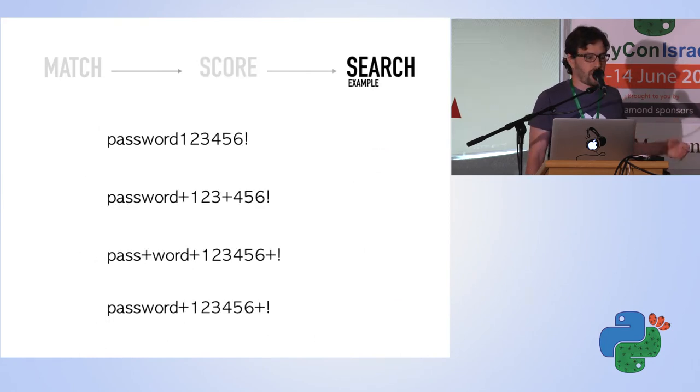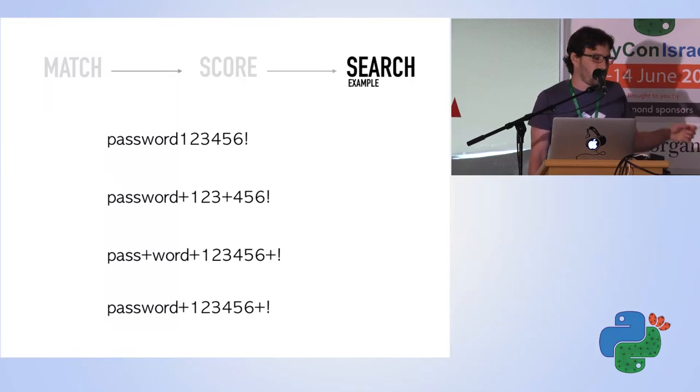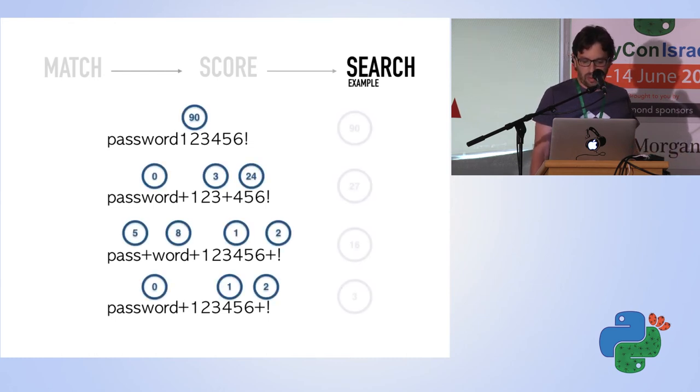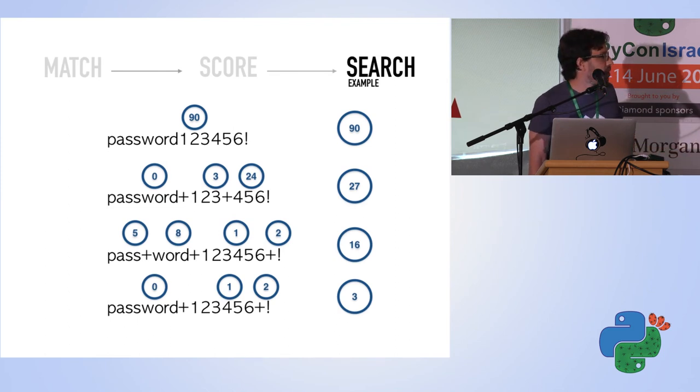As you can see, every password has a lot of builds. You can build in many ways from the substrings. If we take the scores from the previous step and put it here, you can see that every build gives us a different entropy if we sum it all up. What we're really looking for is the build that gives the minimal score.